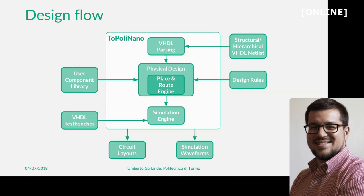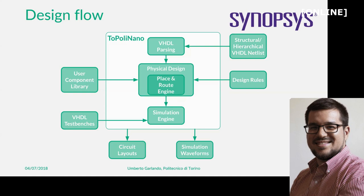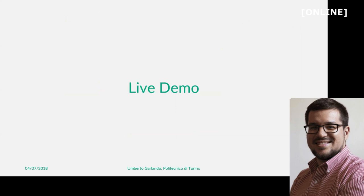Topolino Nano, on the contrary, is a physical design tool. The idea is to start from a post-synthesis HDL netlist — for example, designed using Synopsys — map the circuit on a device library compatible with Topolino Nano, and then provide the netlist to the tool. It parses the netlist and uses a place-and-route engine to perform the physical layout. Simulation with a VHDL test bench is also supported inside the tool.